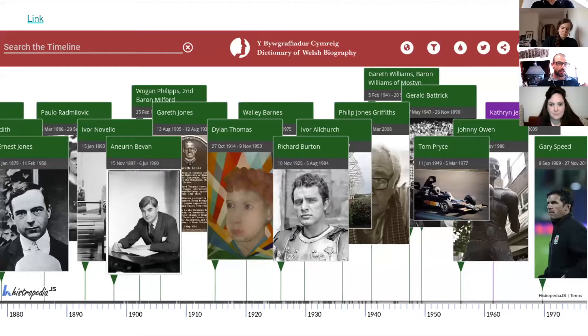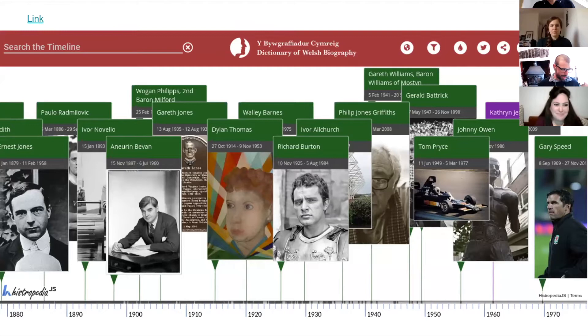We're now starting to see how we can use this extra data and round-trip it back to our own systems. For the Dictionary of Welsh Biography on our website, we're adding external links to articles directly from Wikidata. We've just launched a new interactive timeline based on Histropedia, which is powered entirely by Wikidata, and of course draws in images from Wikimedia Commons and text from Wikipedia.